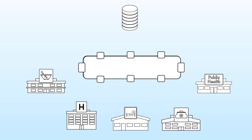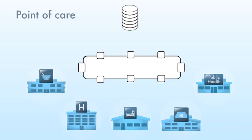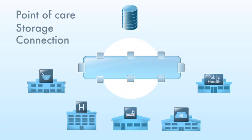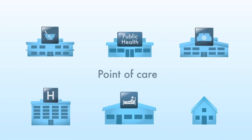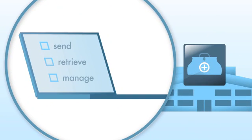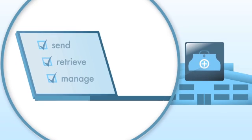The three components are Point of Care Systems, Storage and Connection. The Point of Care Systems component makes sure that all health care providers in Canada have compatible systems in place to send, retrieve and manage critical health information within their individual practice settings.